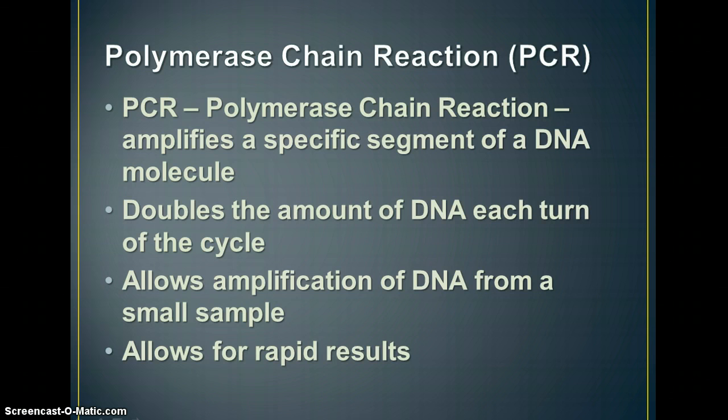So how do we amplify those samples? We do it by means of a process called polymerase chain reaction or PCR. This takes a specific segment of DNA and amplifies it and multiplies it. What it does is it runs through several cycles and it doubles the amount of DNA each time you pass through the cycle. And it allows you to take a very small sample, which you sometimes have just from crime scene evidence, and amplify it into a much larger sample that you can get faster results from.